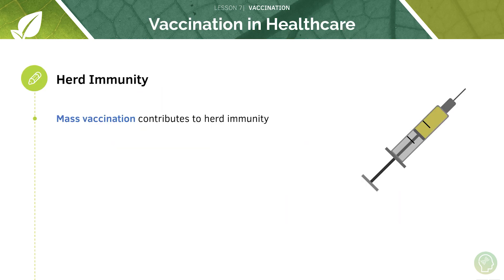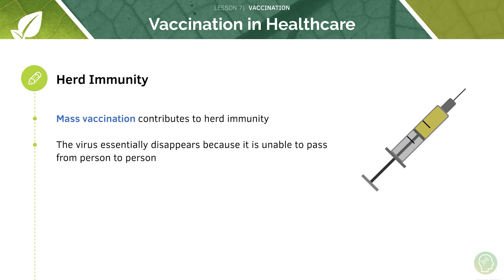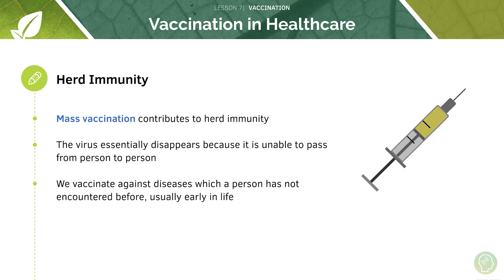Mass vaccination programmes contribute to herd immunity and essentially cause the virus to disappear because it's unable to pass from person to person — it gets blocked by vaccinated people surrounding those who could potentially carry the infection. We vaccinate against diseases a person has not encountered before, and usually early in life.